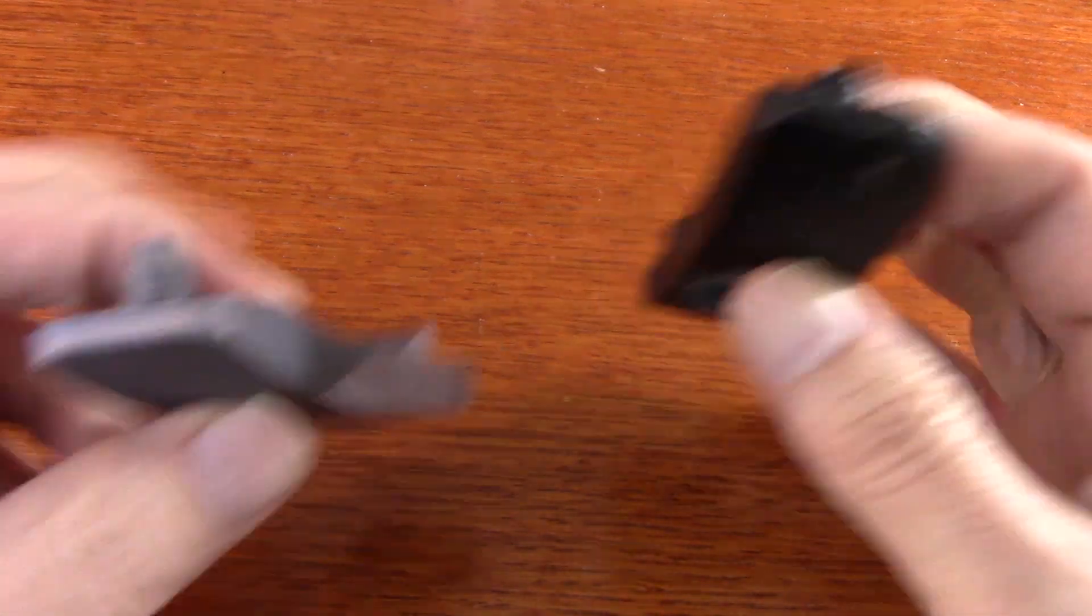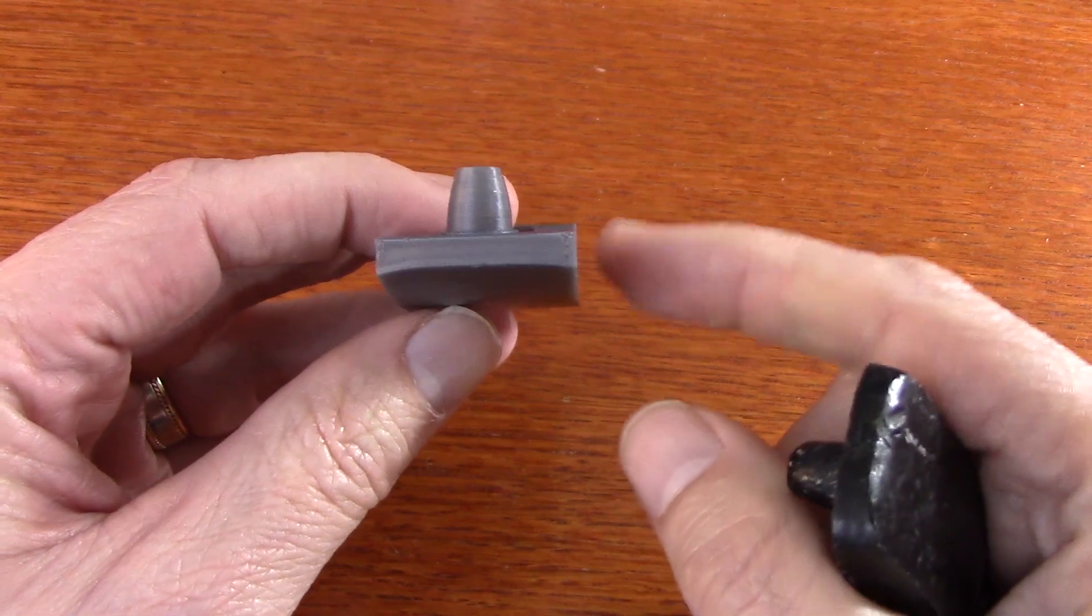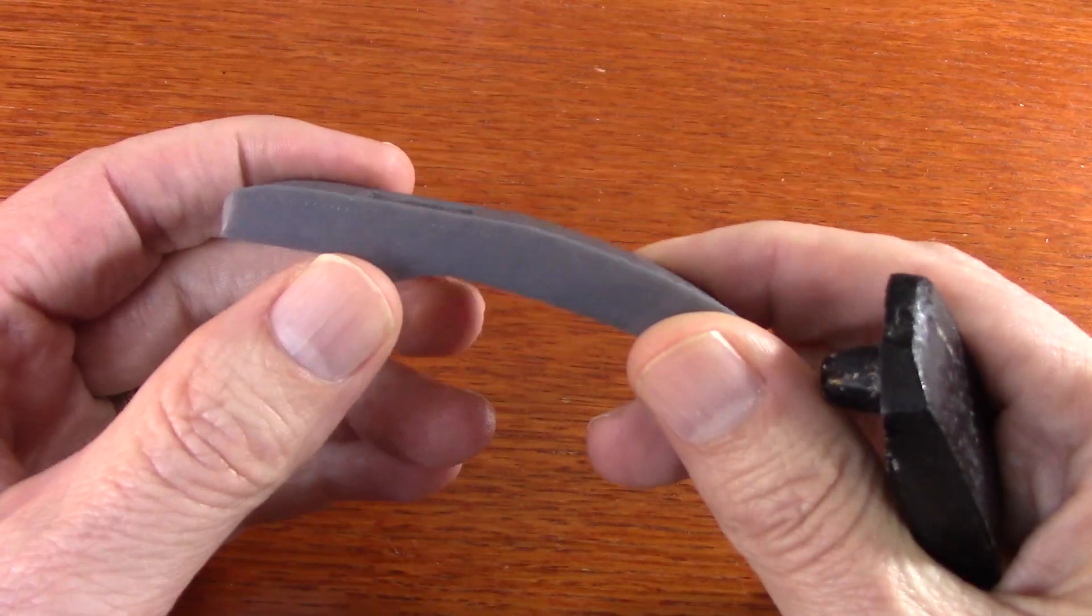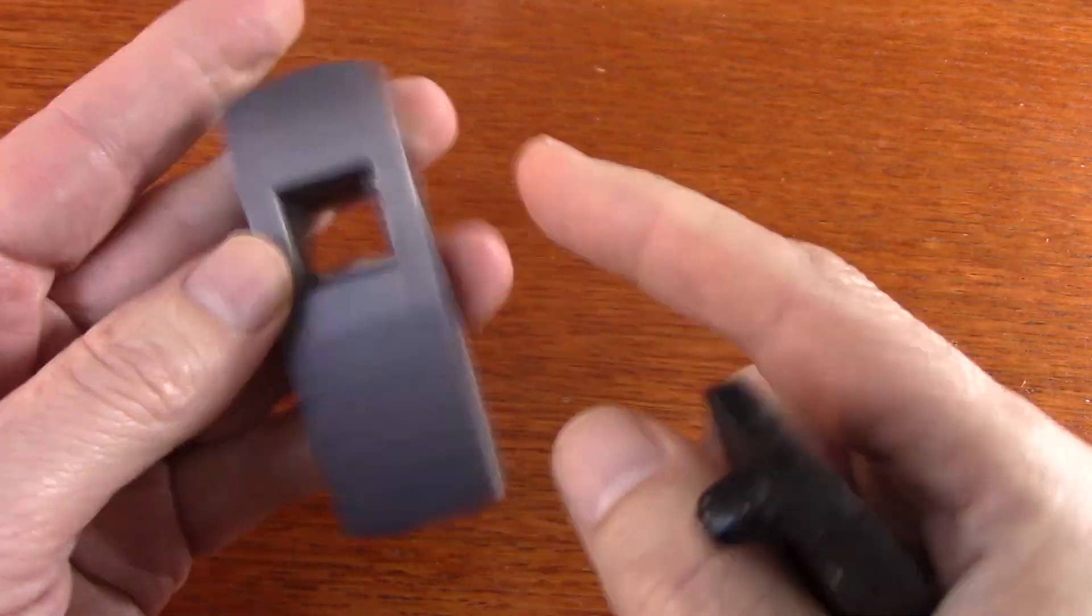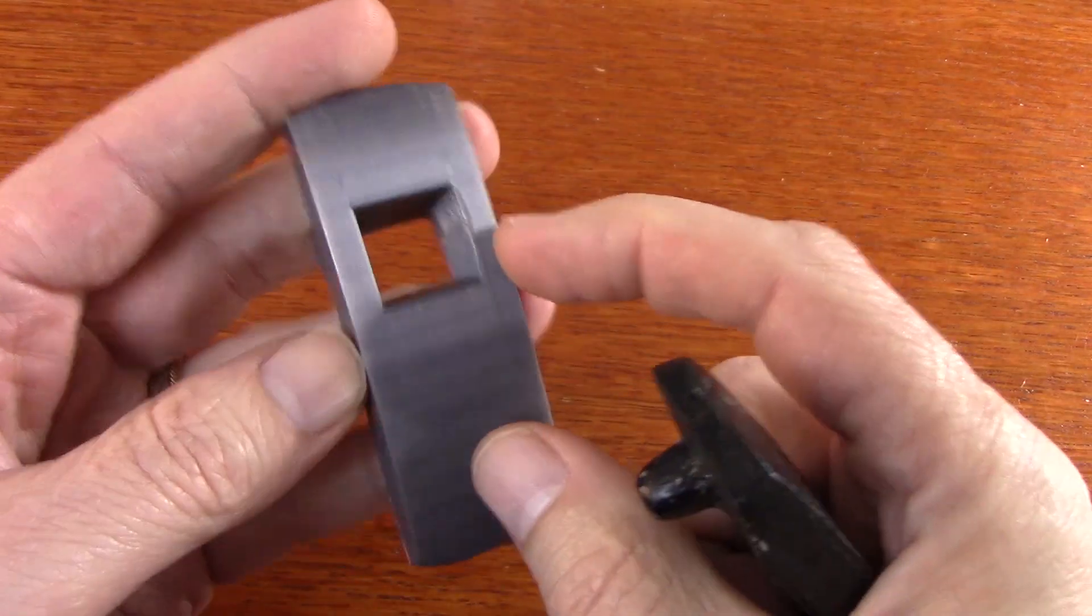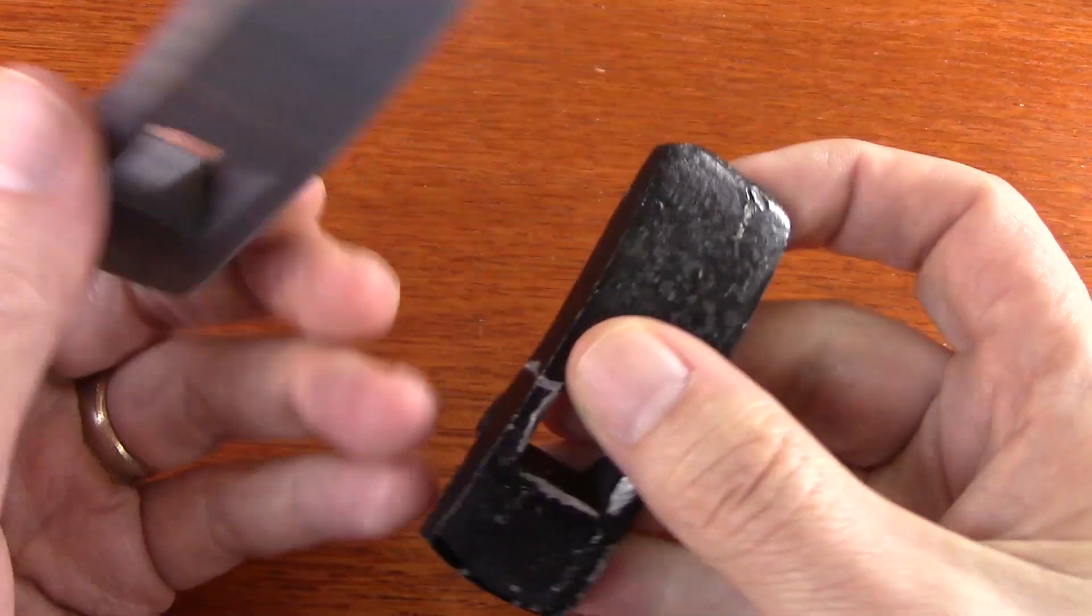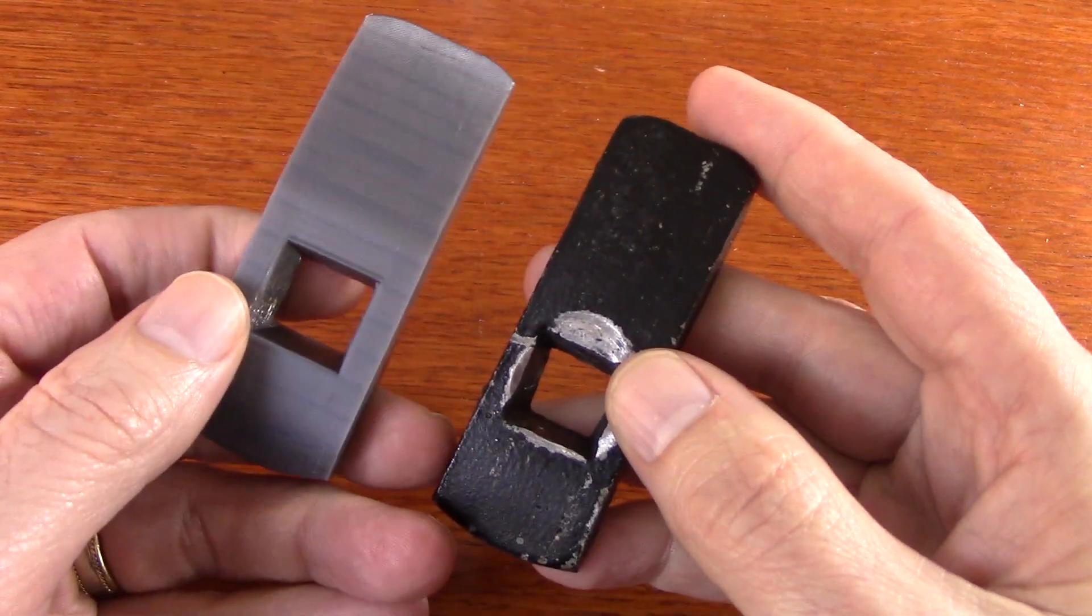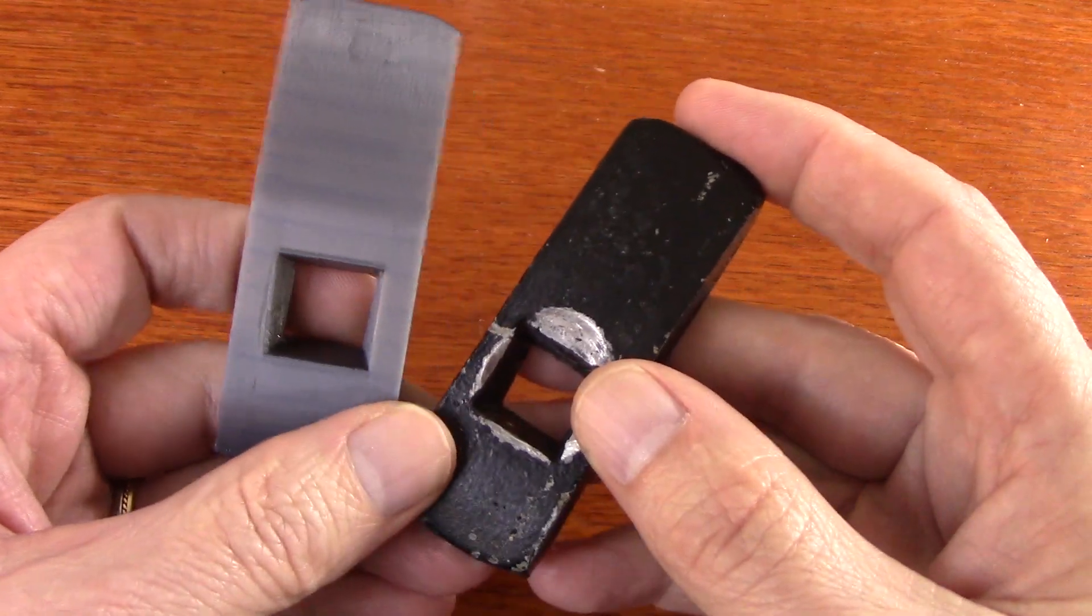One other difference is that you can probably see that there's draft on the side of here again to make it easy to pull it out of the mold. Whereas here it's straight up and down. And I did straight up and down here because that makes it easy to 3D print. Now, if I wanted to make this more accurate, I would add the draft here as well. Adding the draft here though is not going to change this functionally, so I may not add it. I may just go to the next step of working on the toolpaths and getting this ready to cut out of a piece of aluminum. So that's going to be the next thing I cover.